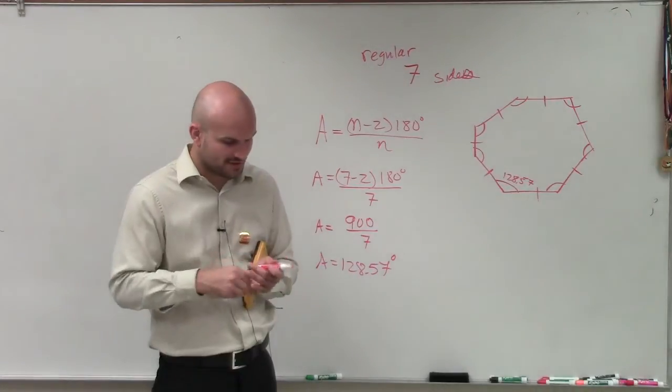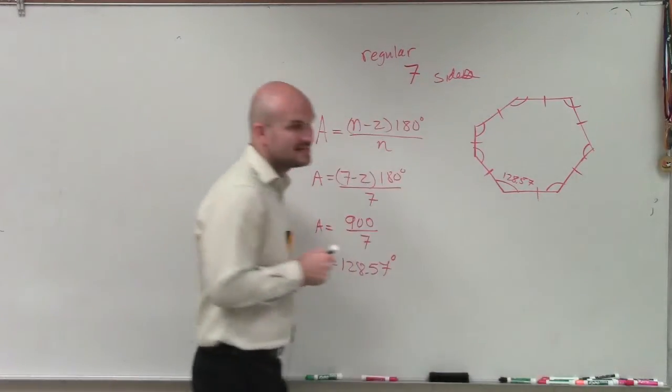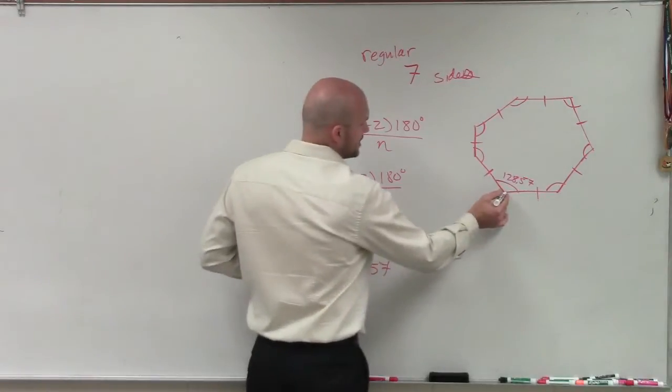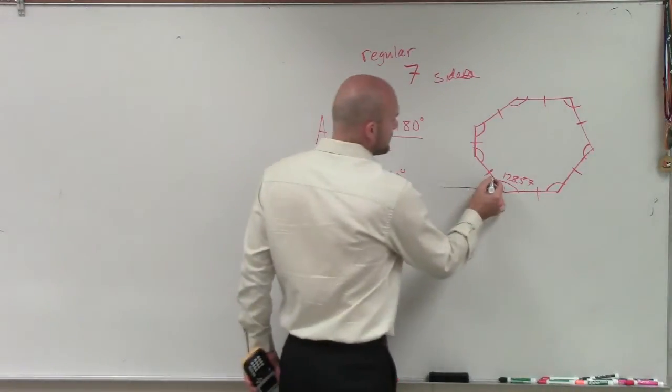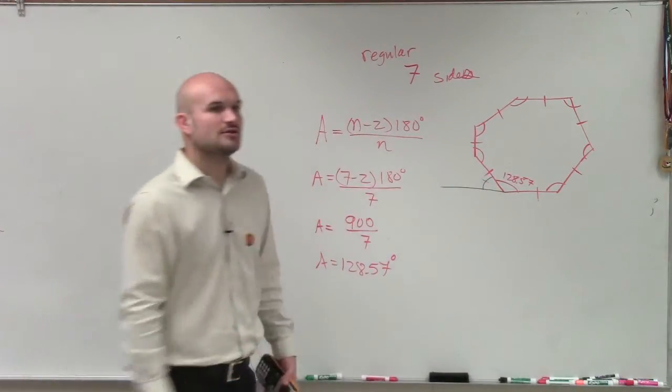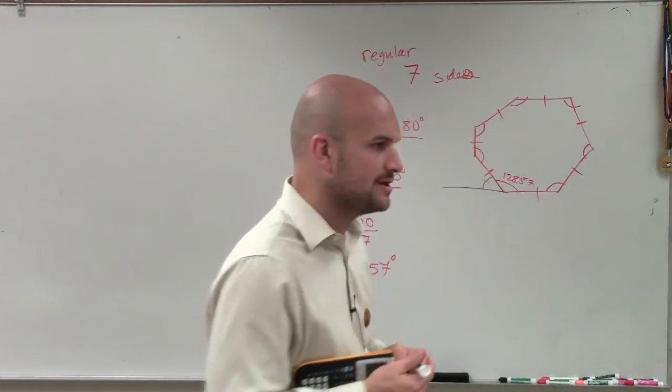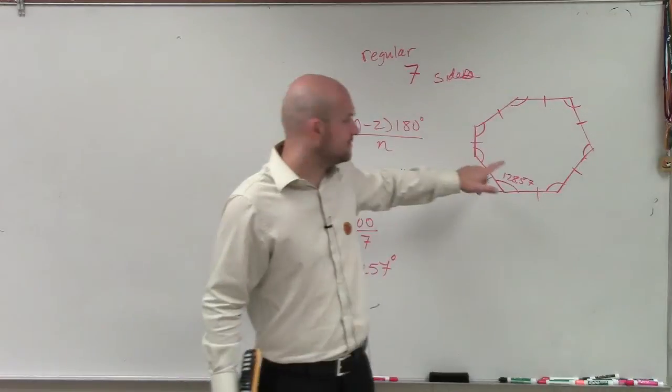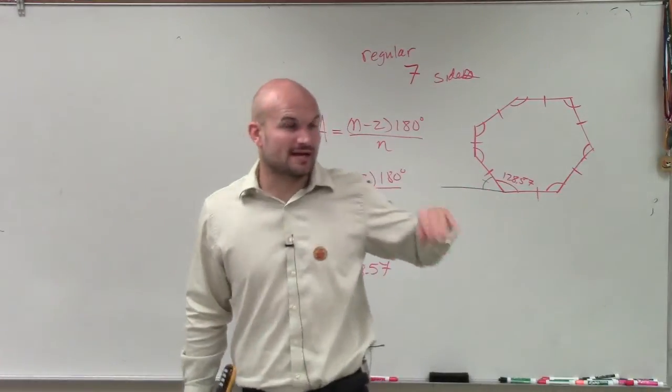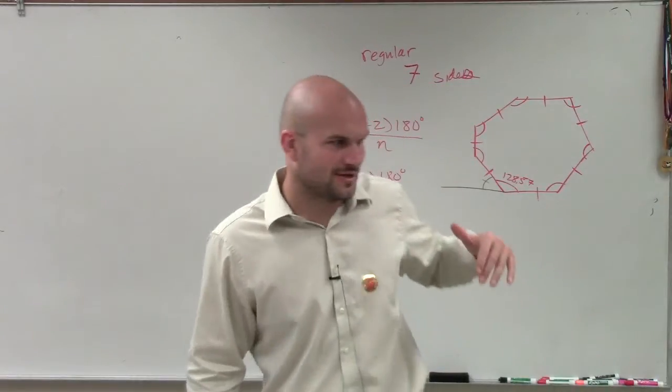To find the exterior angle, we extend the lines that make up our sides, and then the exterior angle is right here. So the interior angle and the exterior angle form what type of angles? They're not vertical - vertical angles come from intersecting two lines.